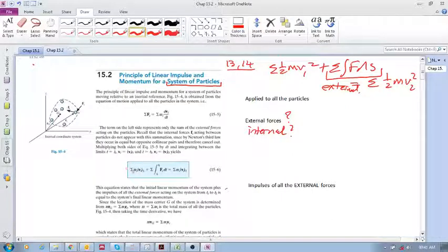We have the sum of all the momentum, or the momentum of each particle, we sum them up at state 1. And then, we identify only the external forces that are acting on our system.